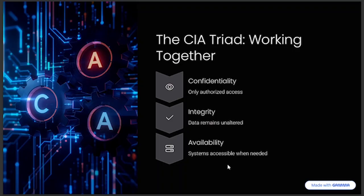Thank you for watching. You should also know how the CIA Triad works together: confidentiality ensures only authorized access to information; integrity ensures data remains unmodified; and availability ensures systems are accessible when needed. Thank you very much.